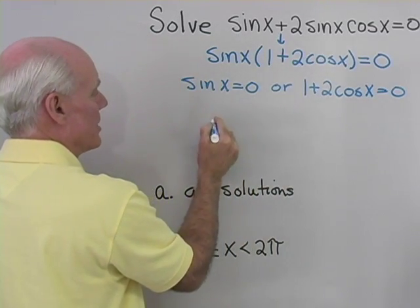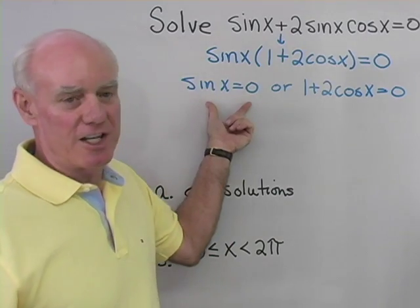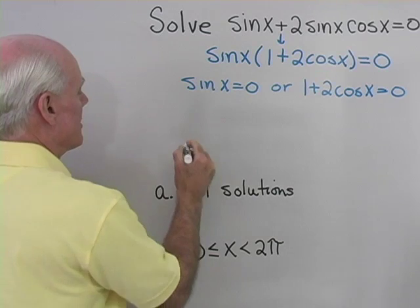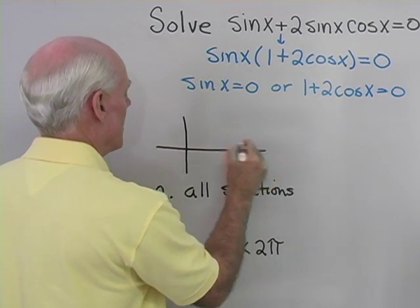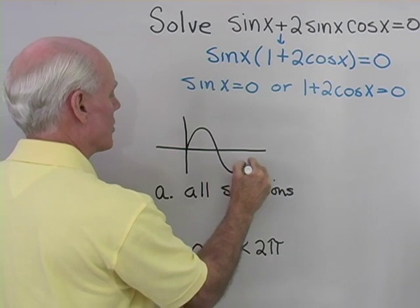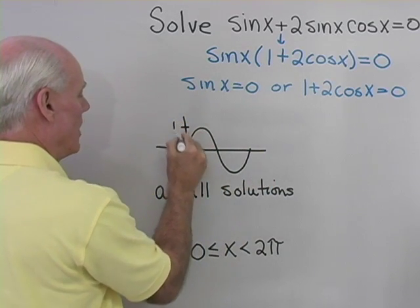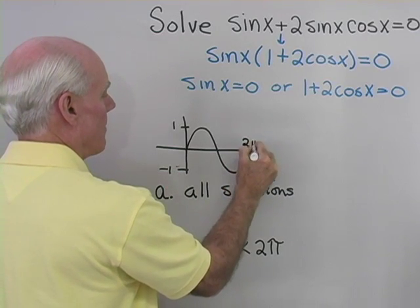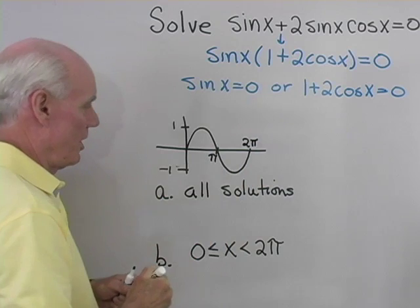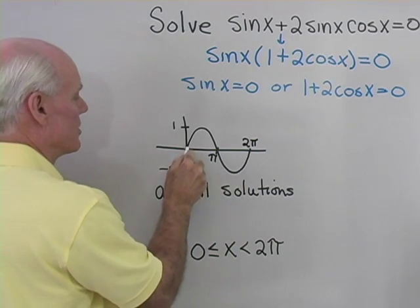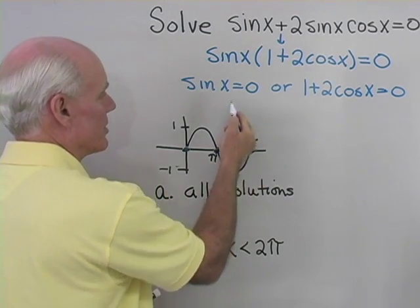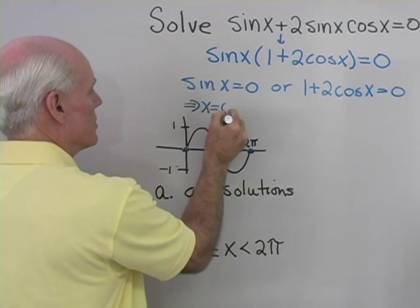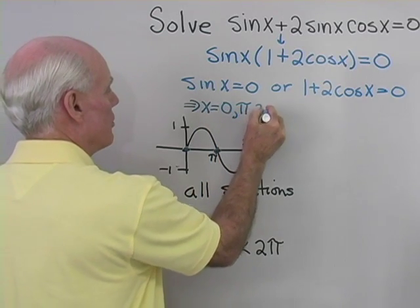This tells me that x must be where sine x equals 0. Let's take a quick look at the graph of y equals sine x. The graph crosses zero here, here, and here — so sine x equals 0 implies x equals 0, or pi, or 2 pi.